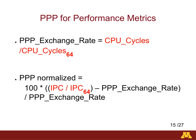For the PPP exchange rate, we use the denominator of IPC, which is the CPU cycles. The 64-thread result is used as the baseline. So you use the baseline of 64 and the results of either the 256 or 128 thread run is divided by that. The IPC ratio is the division of the IPC 128 or 256 thread run divided by the 64-thread baseline.